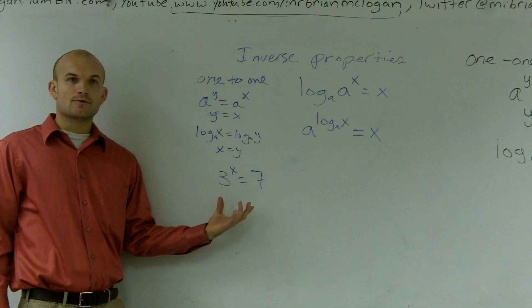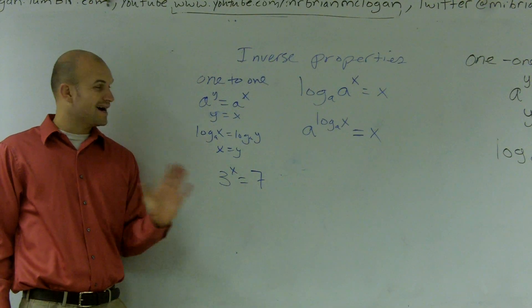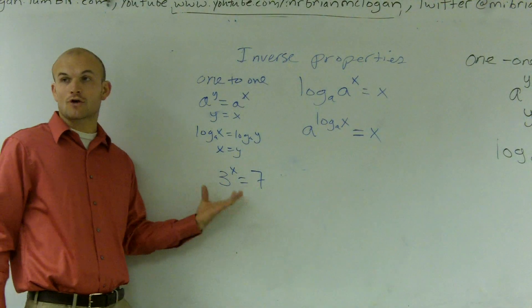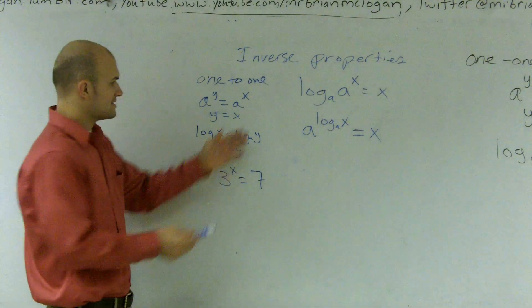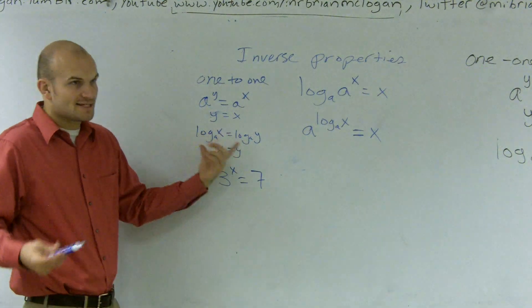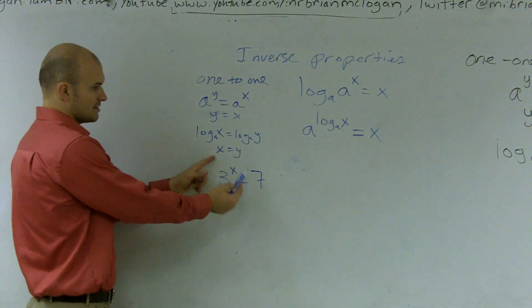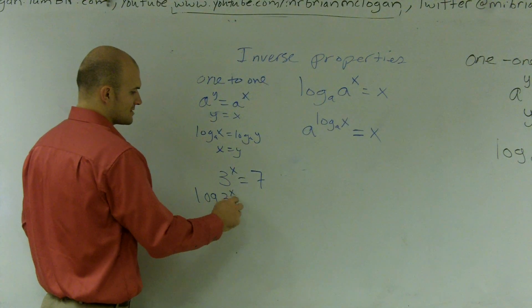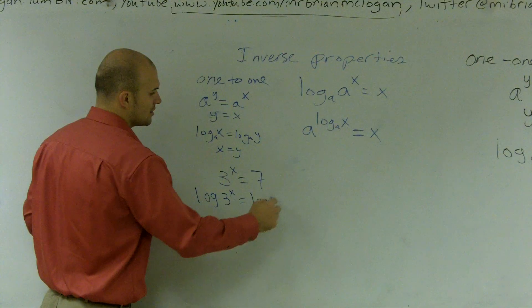Now by using our one-to-one properties, all I know is I can raise both of these to the same power, or I can also take the logarithm of both sides, right? If I take the logarithm of both sides, that's probably fine, because one of these is still going to equal each other. So let's take the log of 3^x equals the log of 7.